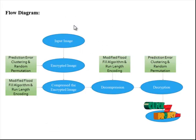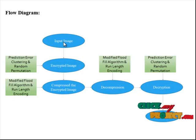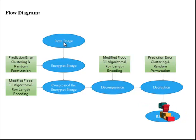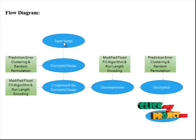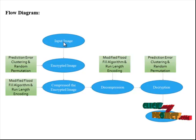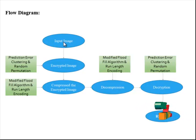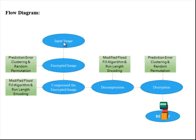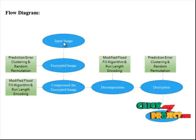Let me discuss about the flow diagram for our process. First, capture the input image from the dataset folder and select any one image. Next, the images are segmented into blocks. Image segmentation is the process of partitioning a digital image into multiple segments, also known as super pixels. The goal of segmentation is to simplify or change the representation of an image into something that is more meaningful and easier to analyze.